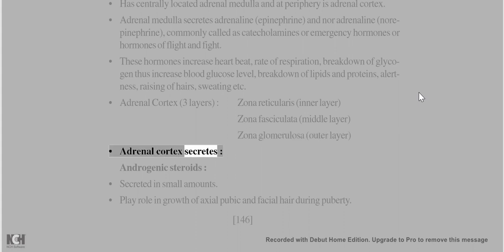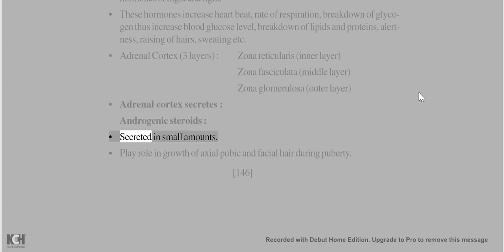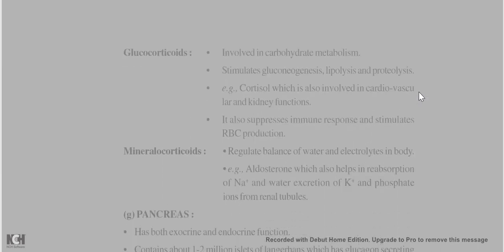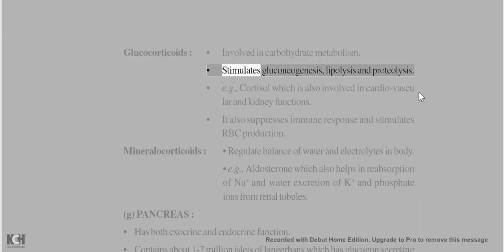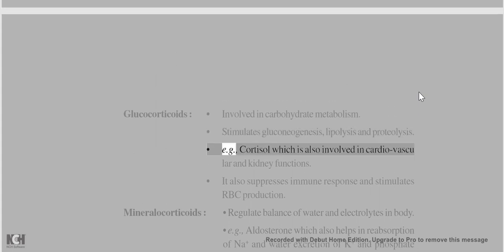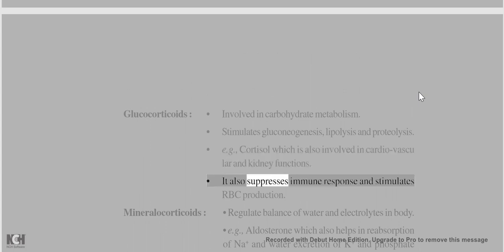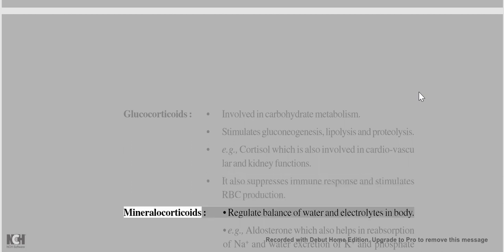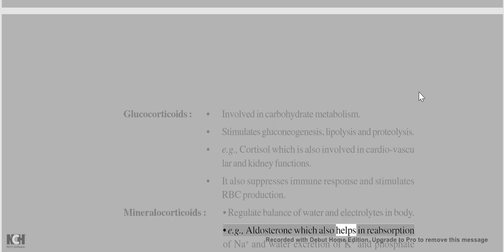Adrenal cortex has three layers: zona reticularis (inner), zona fasciculata (middle), and zona glomerulosa (outer). It secretes androgenic steroids in small amounts, which play a role in growth of axial, pubic, and facial hair during puberty. Glucocorticoids (e.g. cortisol) are involved in carbohydrate metabolism, stimulate gluconeogenesis, lipolysis, and proteolysis, and are involved in cardiovascular and kidney functions; they suppress immune response and stimulate RBC production. Mineralocorticoids (e.g. aldosterone) regulate water and electrolyte balance.